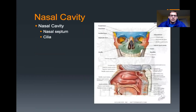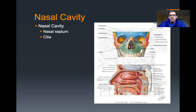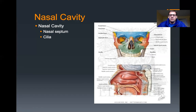To start with, there is the nasal cavity, which is in the skull. It's separated into right and left halves by the nasal septum, and lining the nasal cavity are cilia that beat back and forth and help to trap foreign particles. As air enters into the nasal chamber, it gets warmed and moistened and also filtered before it gets down into the rest of your respiratory tree, because you don't want to breathe in super cold air and have it go down into your lungs.